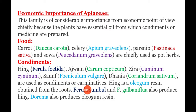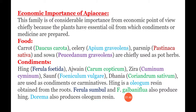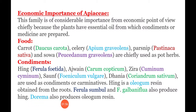Hing is an oleogum resin; it is obtained from the roots. Ferula sambal and Ferula galbaniflua also produce hing. Dorema also produces oleogum. All of these are condiments; some condiments are oleogums and they are obtained from the resin ducts.